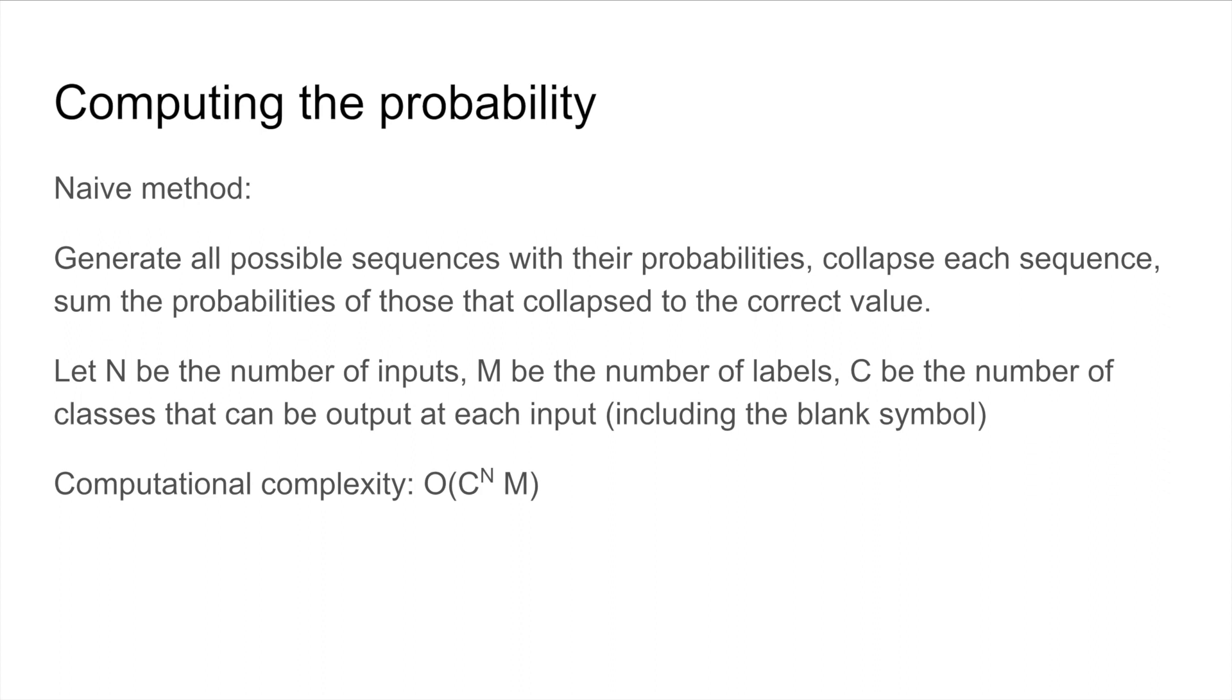Let's try to compute the probability of a given labeling by summing over the probabilities of all the paths that could collapse to that labeling. So a naive way to try to do this is to generate all the possible sequences with their probabilities, then we can collapse each sequence, and then we just sum the probabilities of those that collapse to the correct value. So let's put this in numeric terms. Let N be the number of inputs, M be the number of labels, and then C is the size of L prime. This yields a computational complexity on the order of C to the M times M. So obviously this is exponential in complexity, and not very ideal.